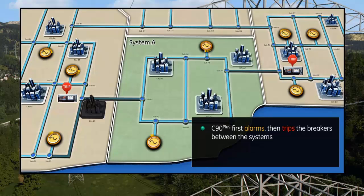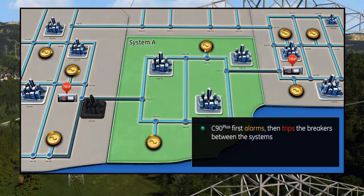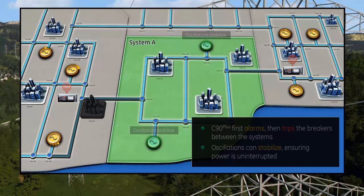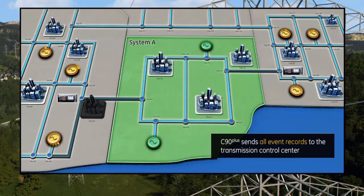Since the instability persists, the C90 Plus alarms, then trips the breakers between the two systems, isolating System A from the instability. This makes it easier for the oscillations in System A to stabilize, ensuring the generators do not trip and power is uninterrupted.